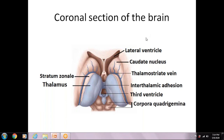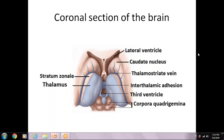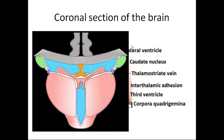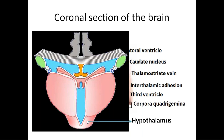If you understand this, I will proceed with the relations of the hypothalamus. In a diagrammatic coronal representation, you can see the lateral ventricle, thalamus, and third ventricle. Below the thalamus, this part is the hypothalamus. Now you know the location of the hypothalamus — it is situated below the thalamus.